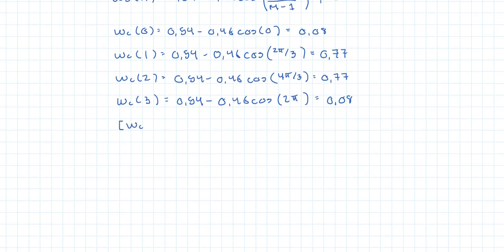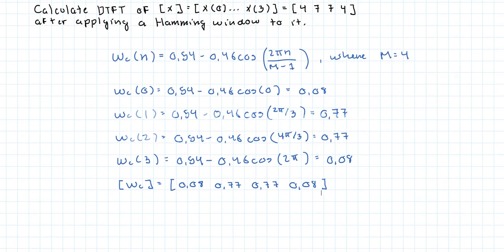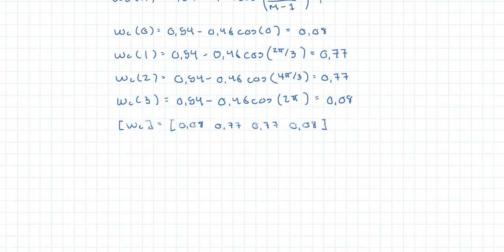So the window expressed as a vector here would be [0.08, 0.77, 0.77, 0.08]. You shouldn't be surprised that it's also kind of like a type 2 signal.